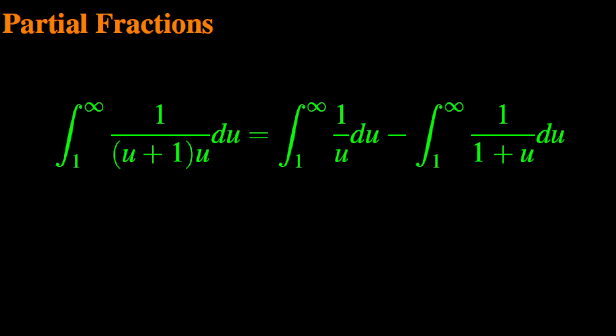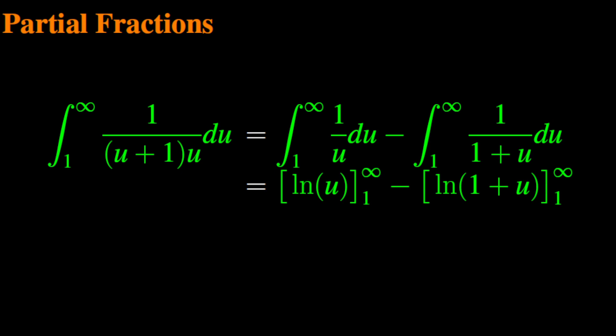So, the integral from 1 to infinity of 1 over u times u plus 1 du is equal to the integral from 1 to infinity of 1 over u du, minus the integral from 1 to infinity of 1 over u plus 1 du. We know that the antiderivative of 1 over u is natural log of u, and the antiderivative of 1 over u plus 1 is natural log of u plus 1. Therefore, the result equals the antiderivatives log of u minus log of u plus 1, evaluated at the endpoints 1 and infinity.